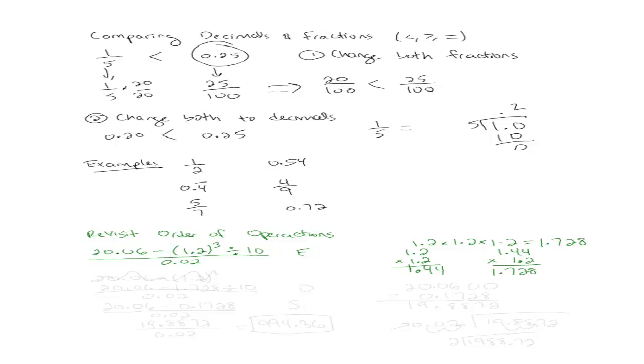So I'm just going to rewrite my problem. 20.06 minus 1.2 cubed. I just did that part. Let me skip that. 20.06 minus 1.728 divided by 10 over 0.02. Okay. What do I do now? Division. Yep. Division by 10. So division by 10 is really easy.